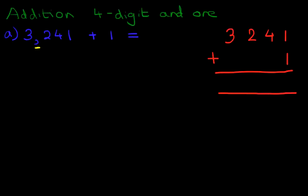Let's label the columns. We've got units, the next one is the tens column, the one next to it is the hundreds column, and this one is the thousands.